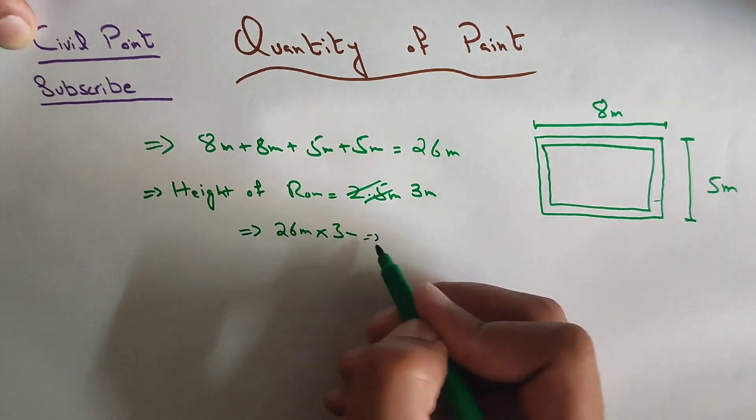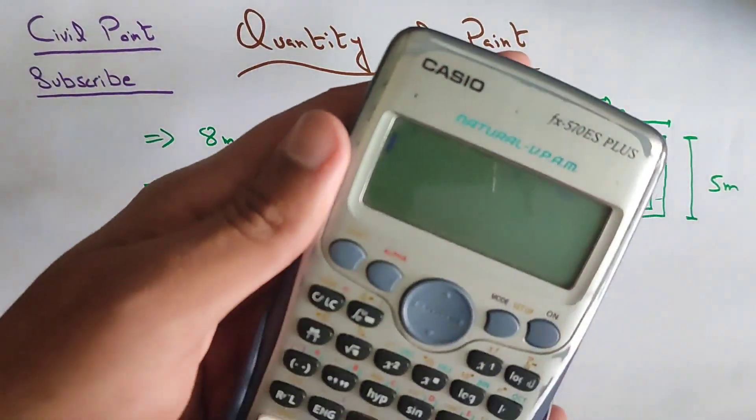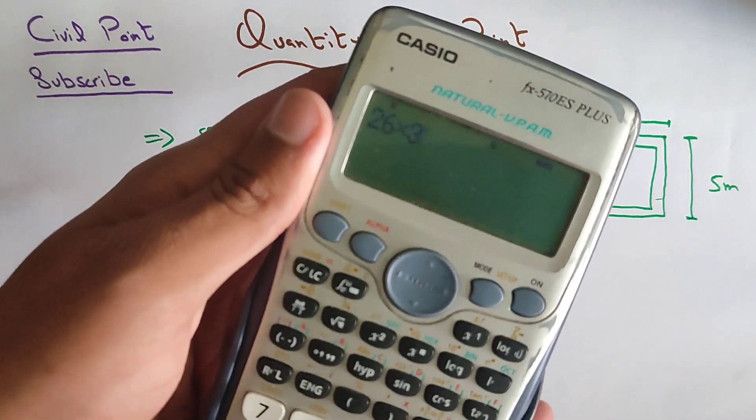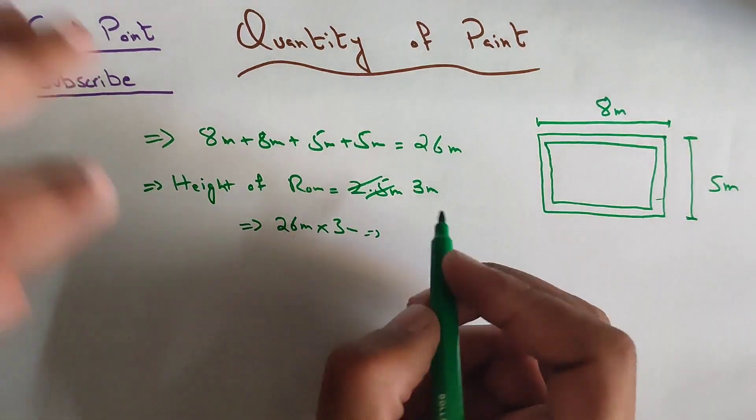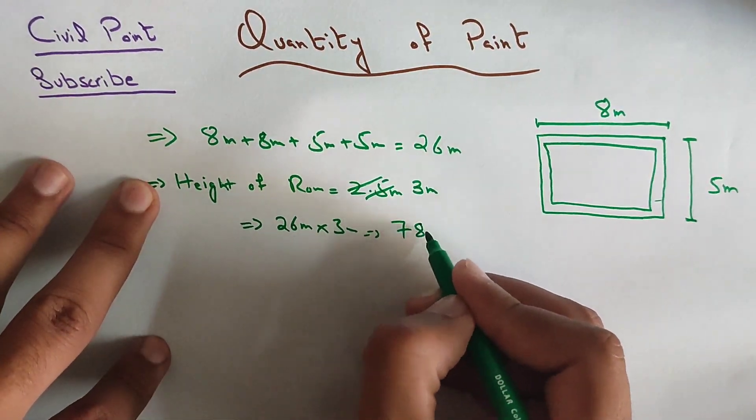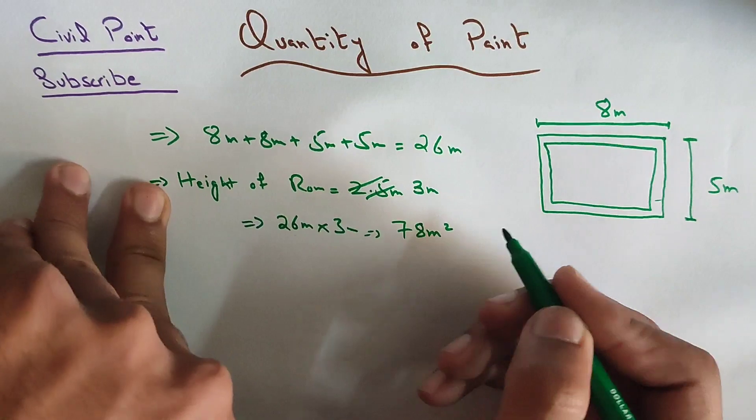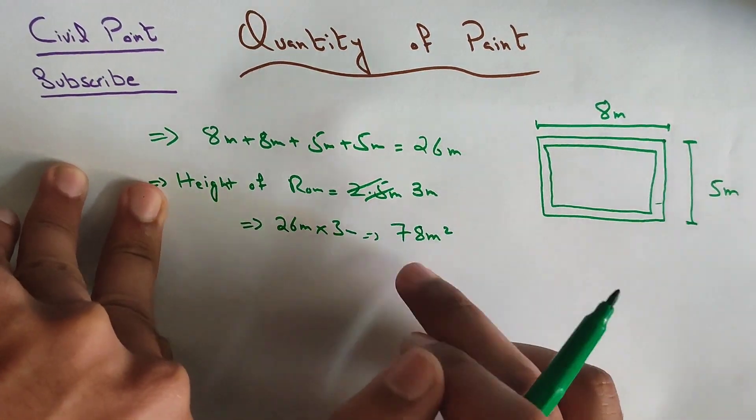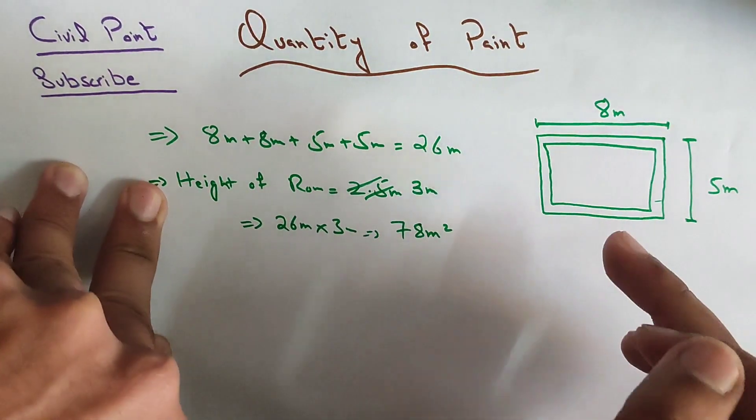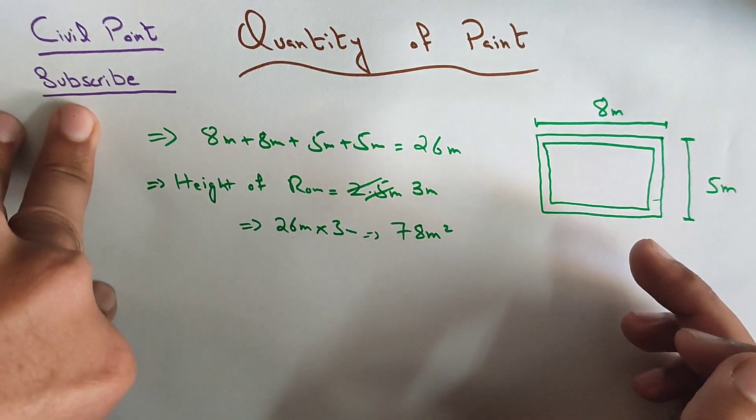What we will get is 26 into 3, which is 78 square meters. So this is the total area of the paint that we will use for this room.